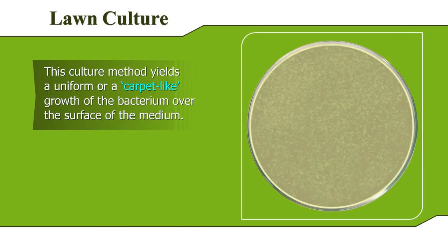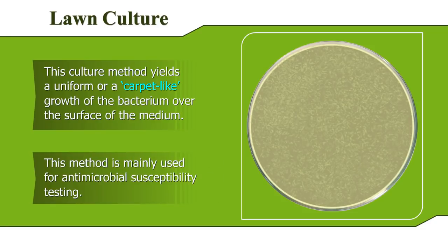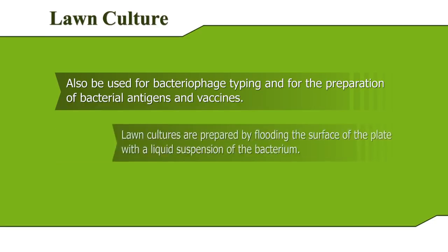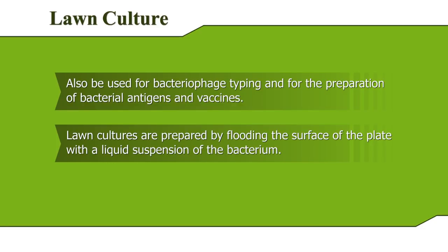Lawn Culture. This culture method yields a uniform or carpet-like growth of the bacterium over the surface of the medium. This method is mainly used for antimicrobial susceptibility testing. It may also be used for bacteriophage typing and for the preparation of bacterial antigens and vaccines. Lawn cultures are prepared by flooding the surface of the plate with a liquid suspension of the bacterium.